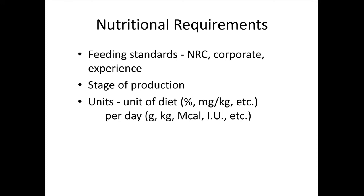We're also concerned with the stage of production and meeting those nutritional requirements. For broiler chickens, the NRC provides feeding standards for different stages: the starter phase, the grower phase, and the finishing stage, because as the animal grows and its production needs change, so do the nutrient requirements. These requirements are expressed in units such as percentage of diet, milligrams per kilogram of diet, grams per day, kilograms per day, megacalories per day, and international units.